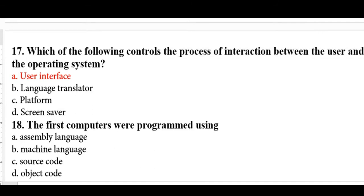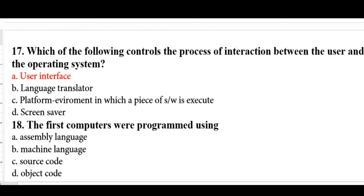A language translator is a programming tool that converts a computer program from one language to another. A platform is an environment in which a piece of software is executed. A screen saver appears when your laptop or desktop display goes off.